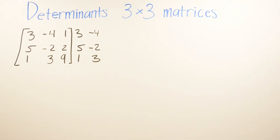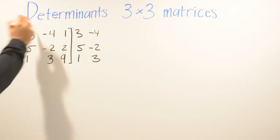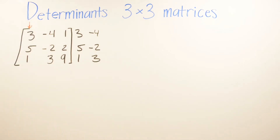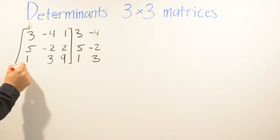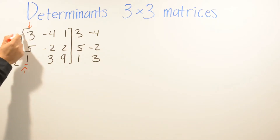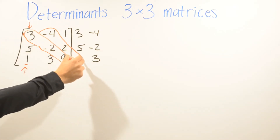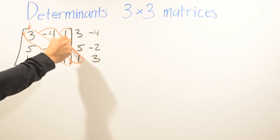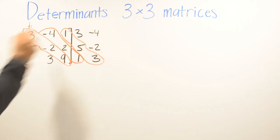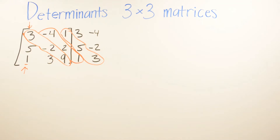Then we're going to multiply diagonally. We're going to start from the top and then do the bottom part. We start with the first number and multiply 3 numbers diagonally. So we multiply those 3 numbers: 3 times negative 2 is negative 6, and negative 6 times 9 is going to give us negative 54.